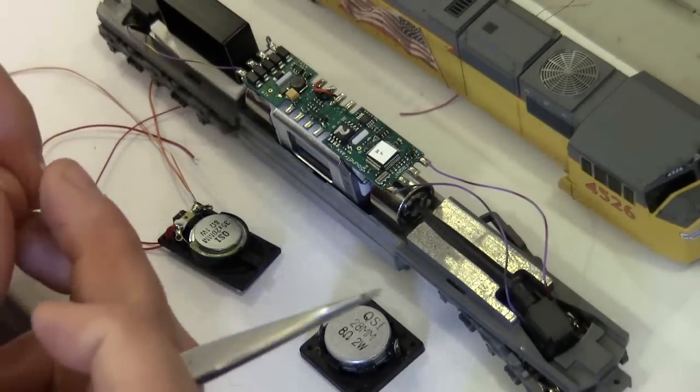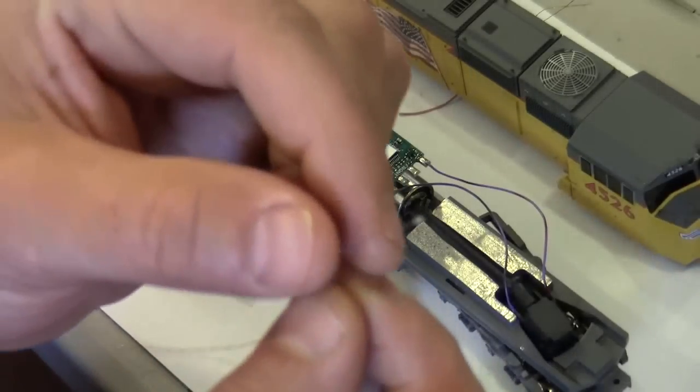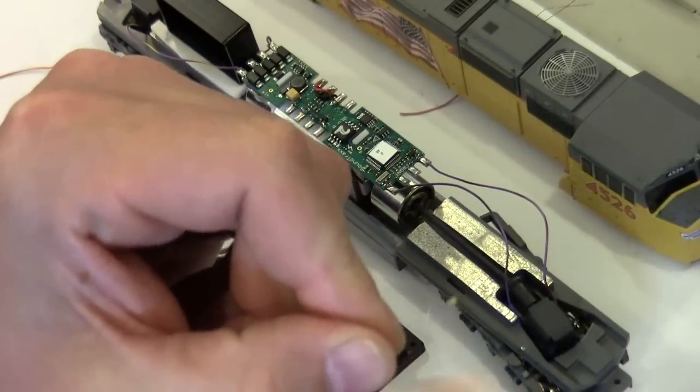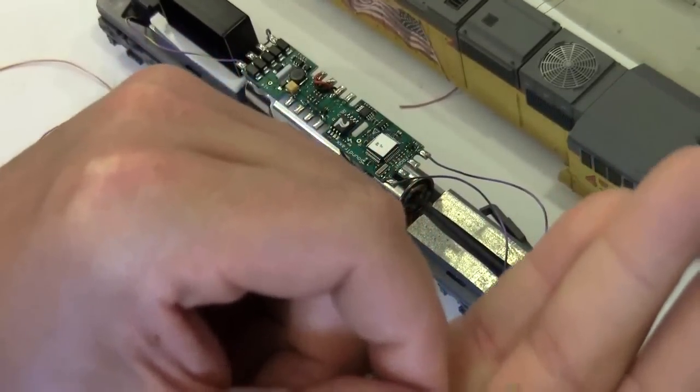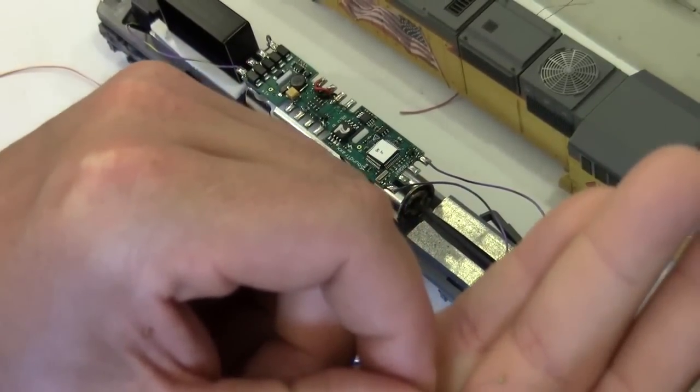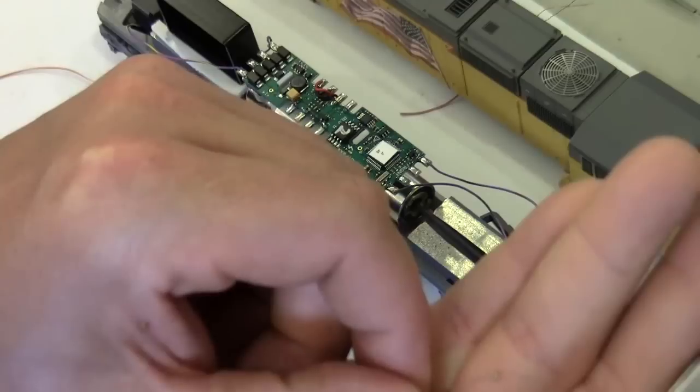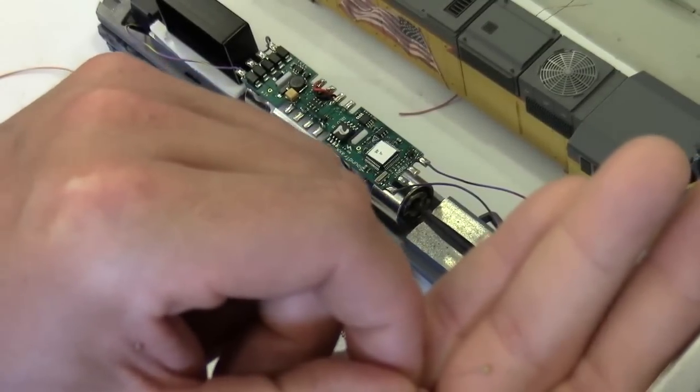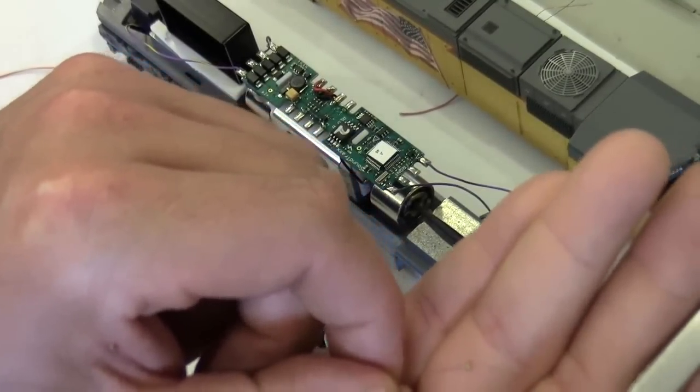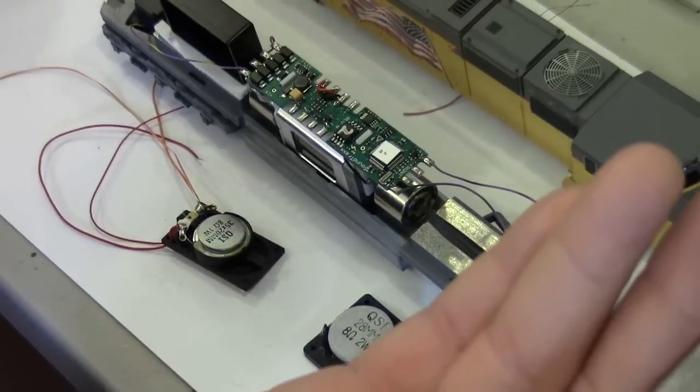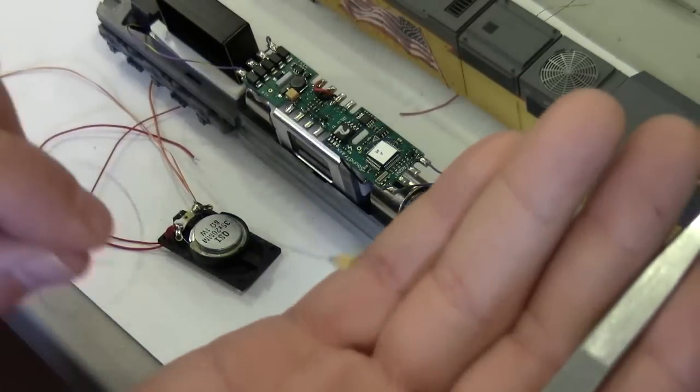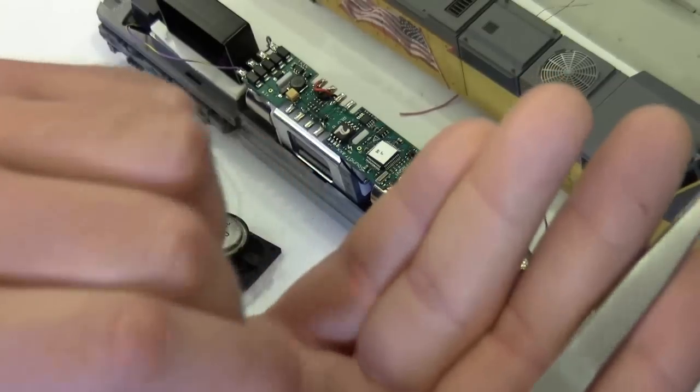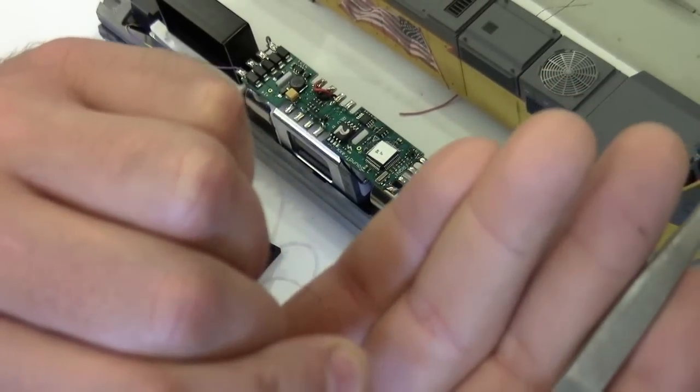You can see right here, they're very, very small. These are the 0603 surface mount LEDs, and I use two of these for the front headlight, two in the rear headlight, and then for the ditch lights...